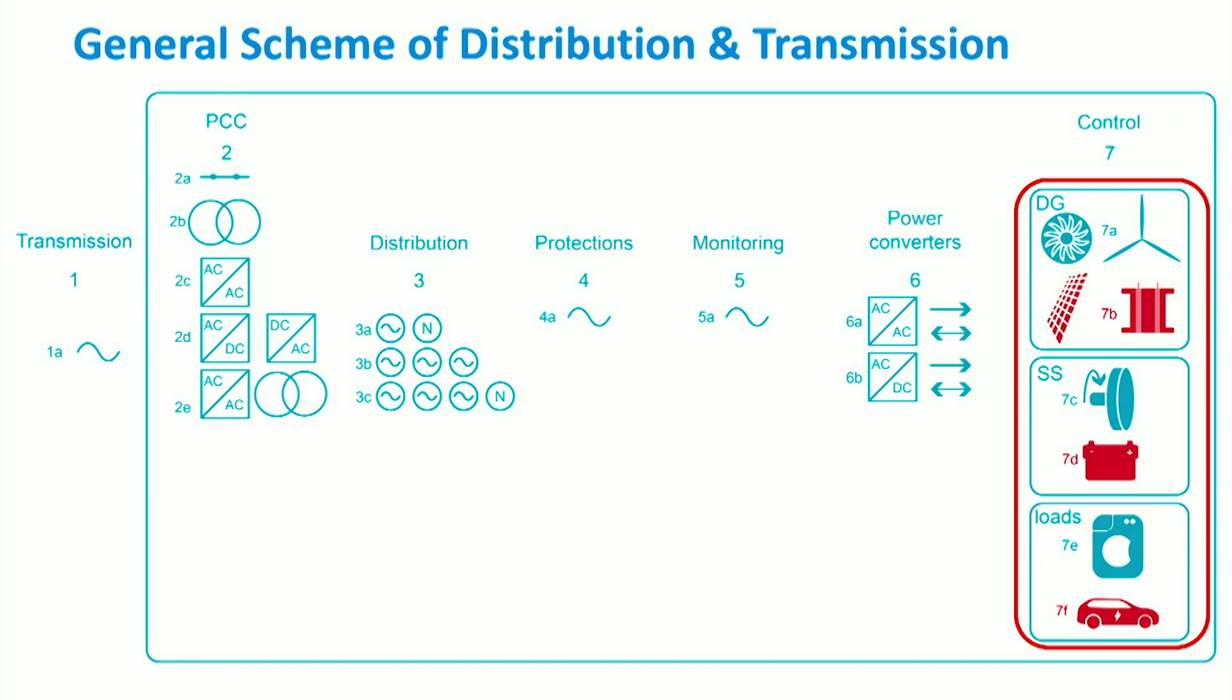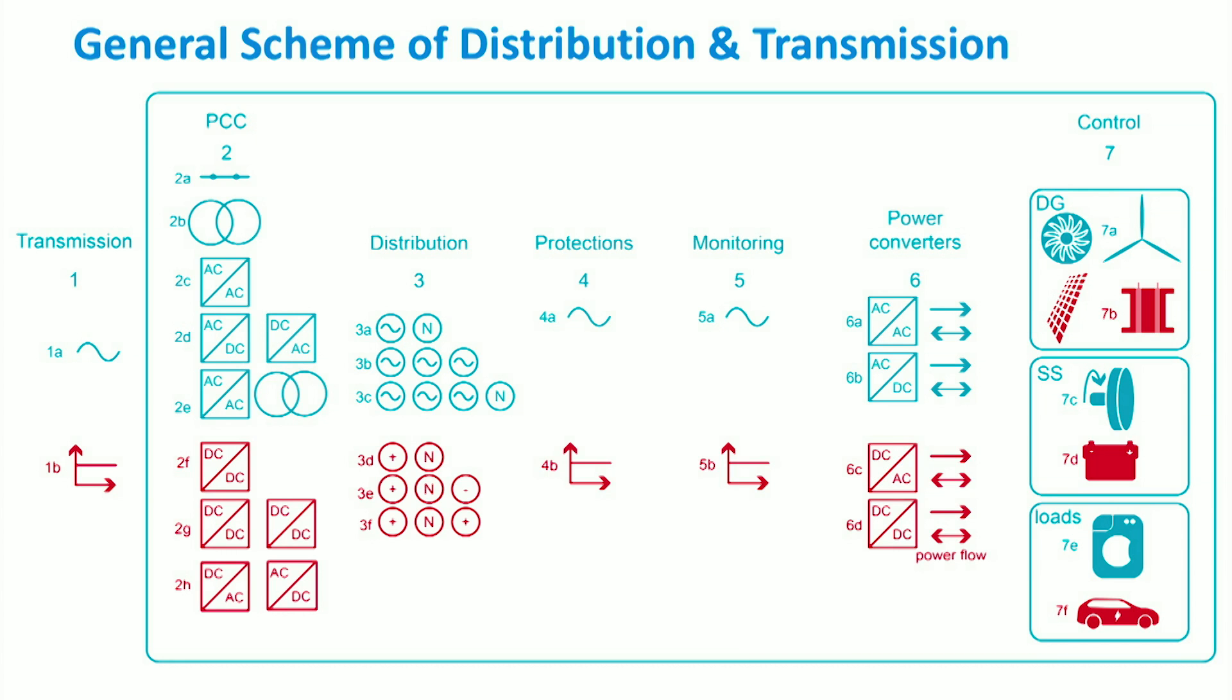Well, so far we reviewed transmission and distribution in AC dominated networks. In practice or reality, the transmission and distribution can also be implemented through a DC network, as the DC transmission and distribution are shown in red color.